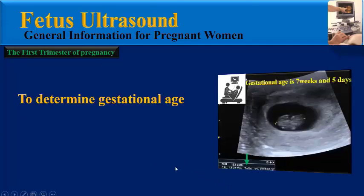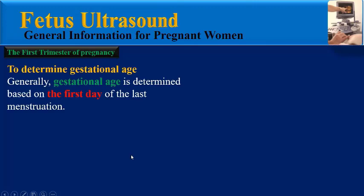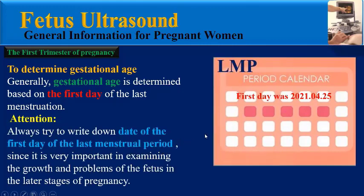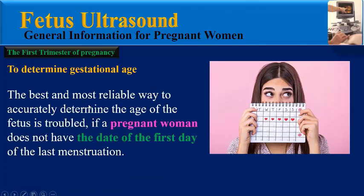Another purpose of first trimester ultrasound is to determine gestational age. Generally, gestational age is determined based on the first day of the last menstruation. Please pay attention — always try to write down the date of the first day of your last menstrual period, since it is very important in examining the growth and problems of the fetus in the later stages of pregnancy.